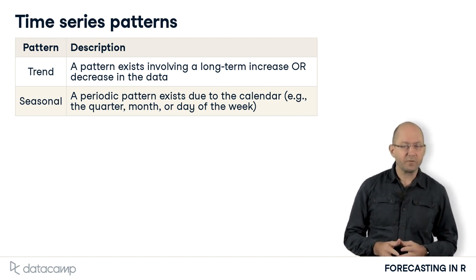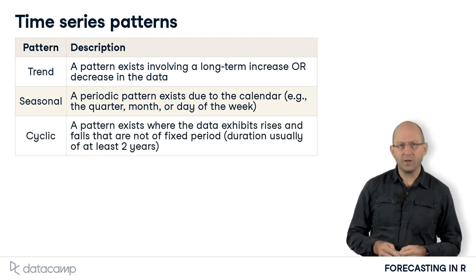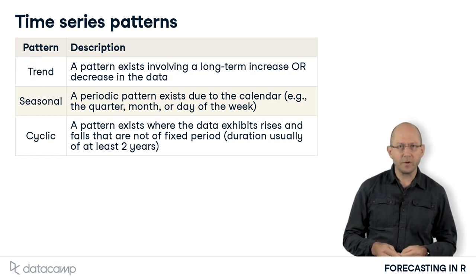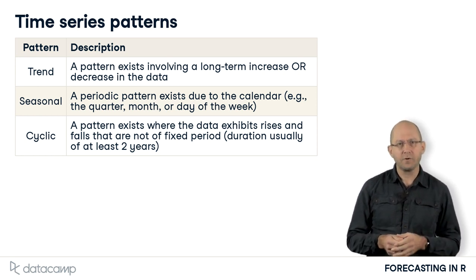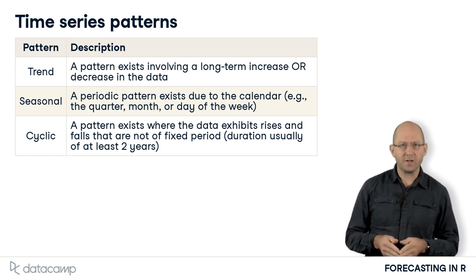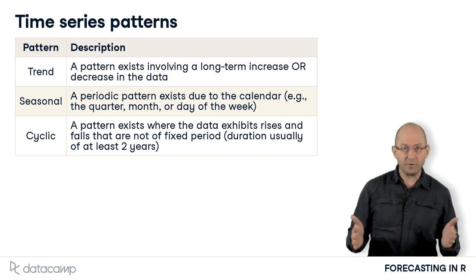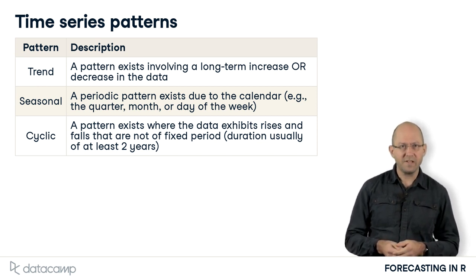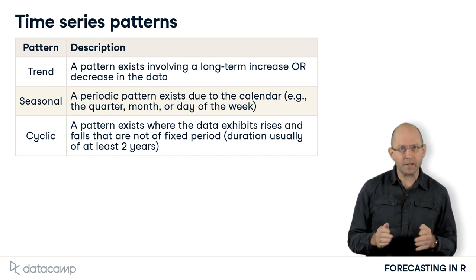This should be distinguished from cyclic patterns. They occur when there are rises and falls that are not of a fixed period. For example, a business cycle might last three, five, or eight years between peaks or troughs. But a seasonal pattern is always of the same length.